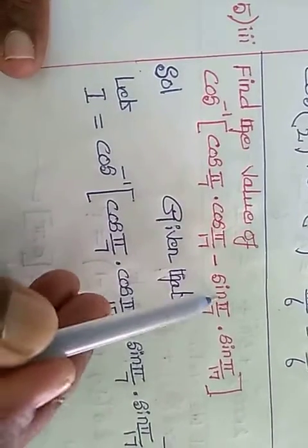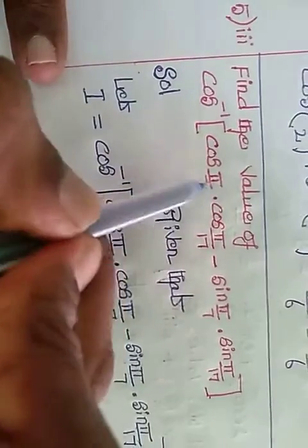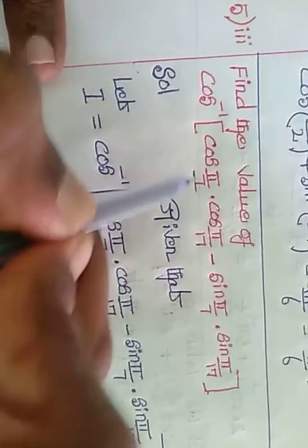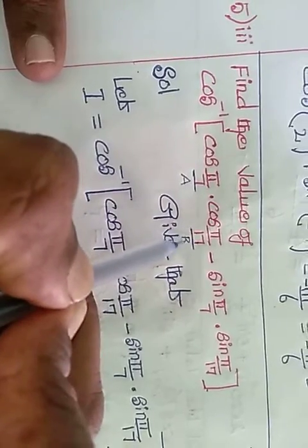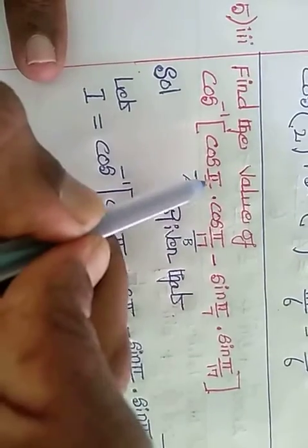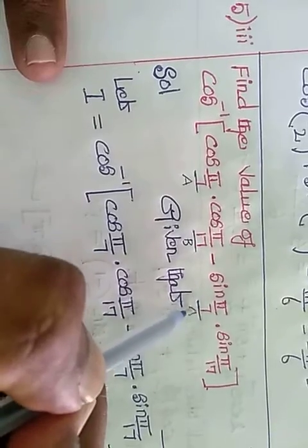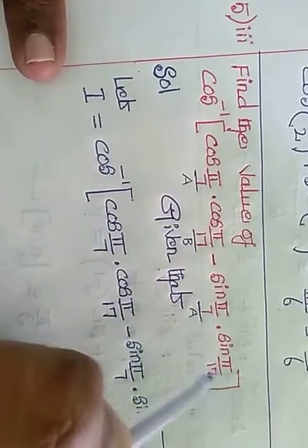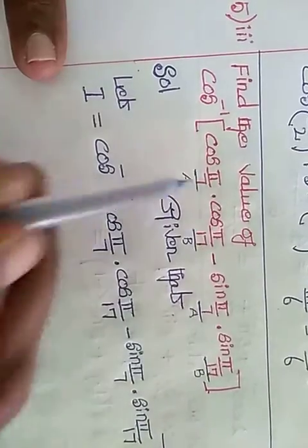Listen students, so this is called a and pi by 17 is called b. So pi by 7, see here pi by 7 and here pi by 7, so both are same a. Here pi by 17 and here pi by 17, same both are same b.